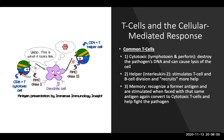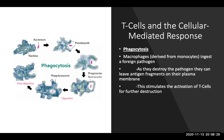T cells in the cell-mediated response: cytotoxic T cells will destroy the pathogen's DNA and cause lysis or splitting of the cell. Helper T cells will stimulate T cell and B cell division to recruit more help. Memory T cells will recognize a foreign antigen and, when faced with that same antigen again, will convert to cytotoxic T cells to help fight the pathogen. Macrophages derived from monocytes will ingest a foreign pathogen, destroy it, and may leave antigen fragments on their plasma membrane to stimulate the activation of more T cells for further destruction.